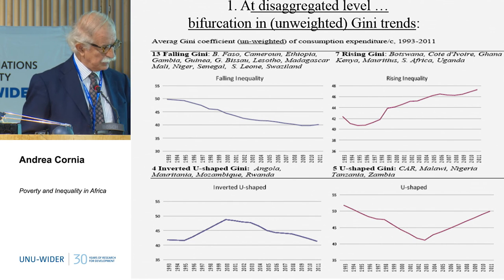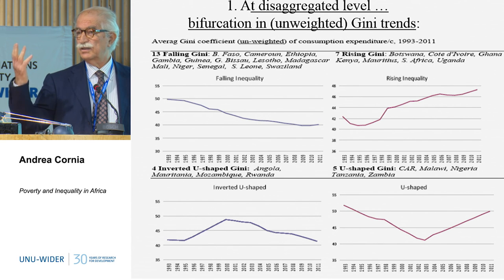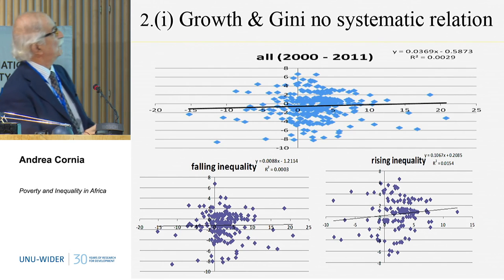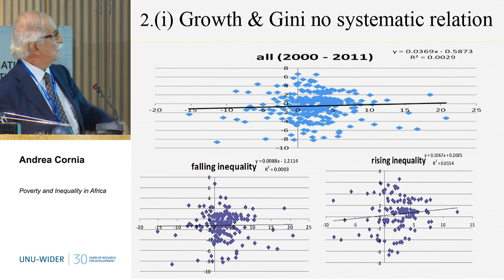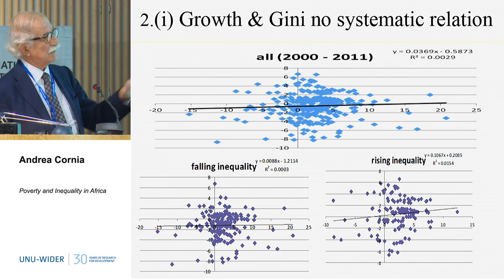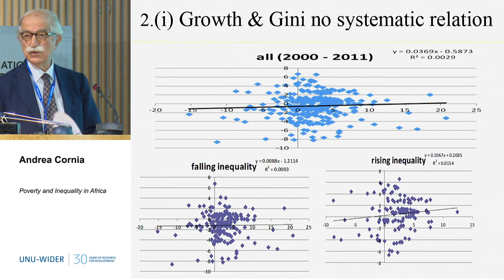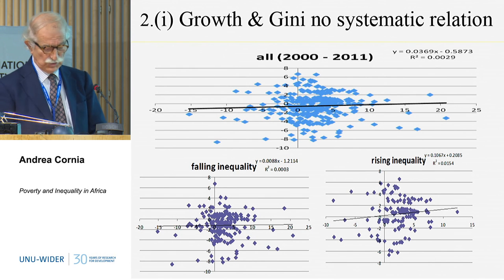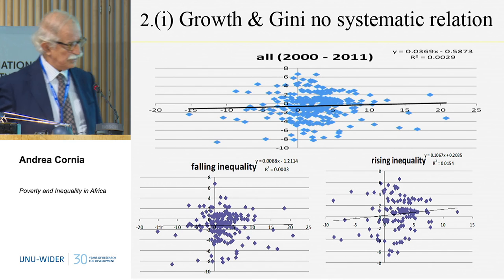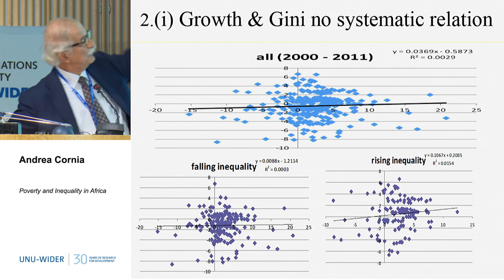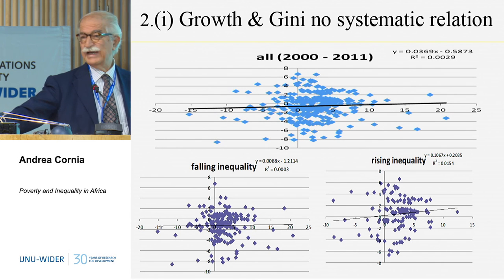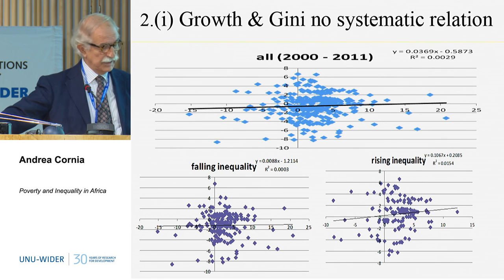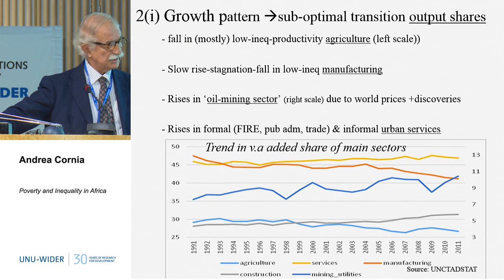Now we try to explain. Growth — if you look at all the examples, there is no relation; the interpolated line is completely flat. If you look at falling inequality countries, there is no relation. If you look at countries with rising inequality, you do see a little bit of an increase in inequality together with growth, which is not what you would expect. Normally you would expect a downsloping line. So growth per se is not a good predictor. The pattern of growth is what is basically important.